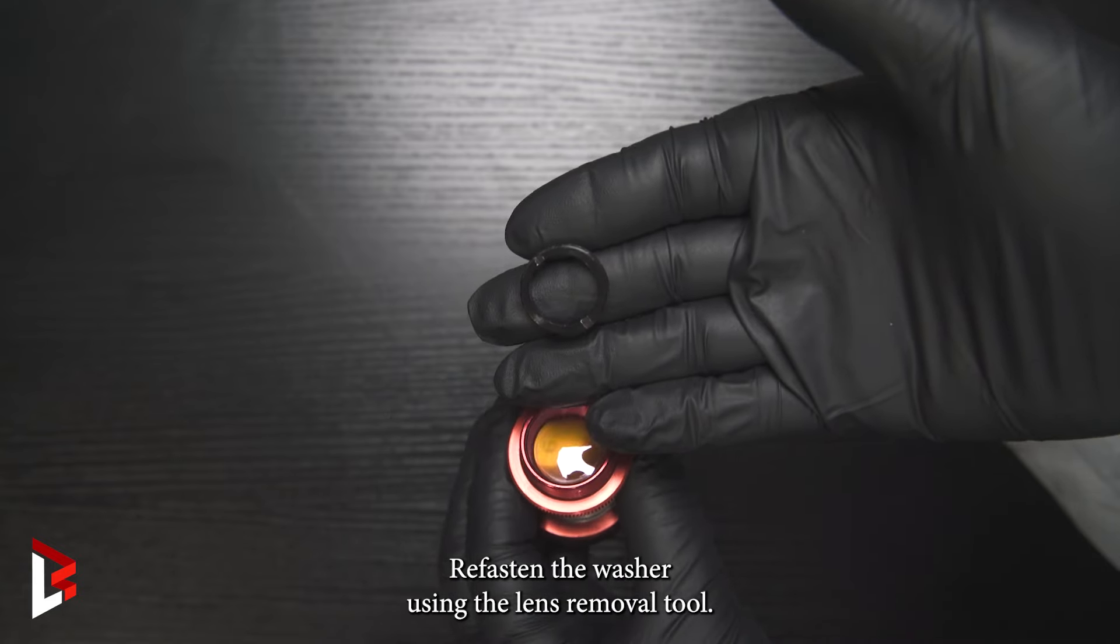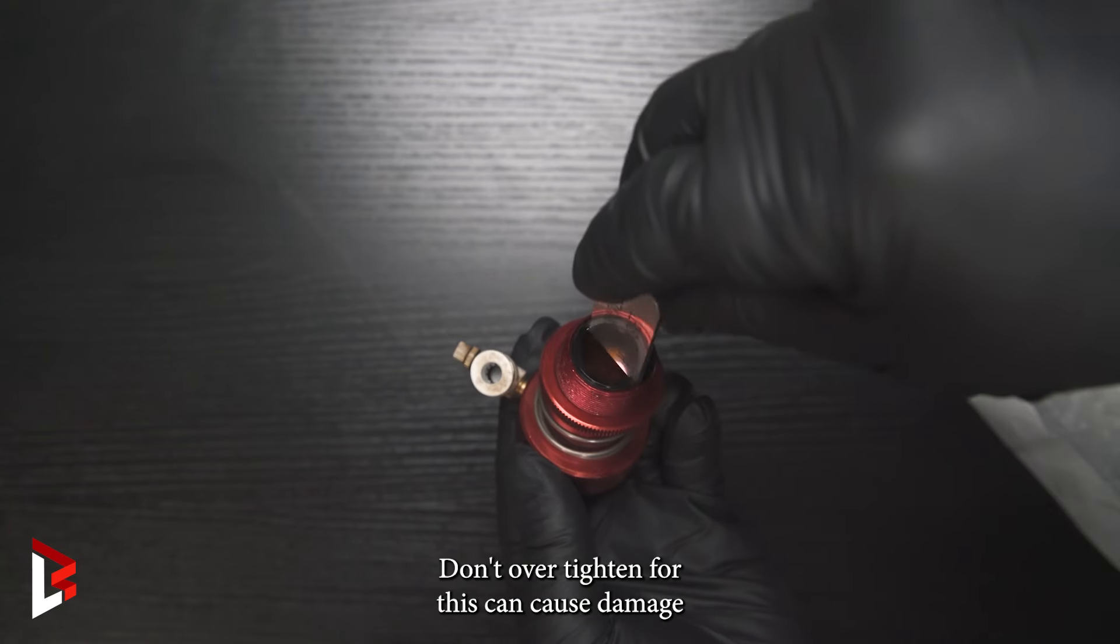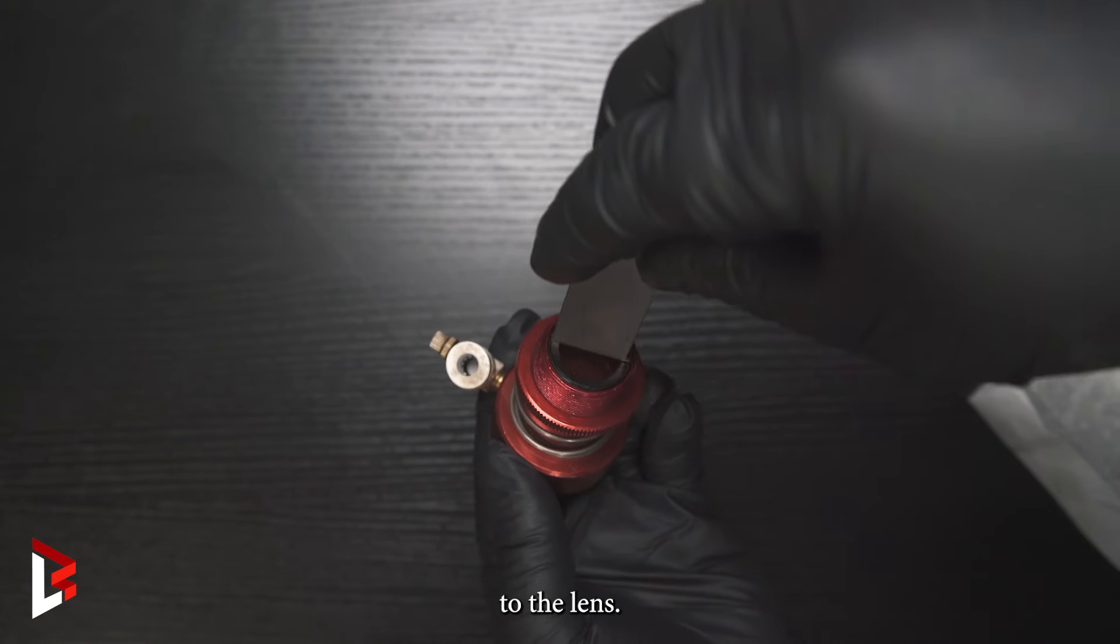Refasten the washer using the lens removal tool. Don't overtighten, as this can cause damage to the lens.